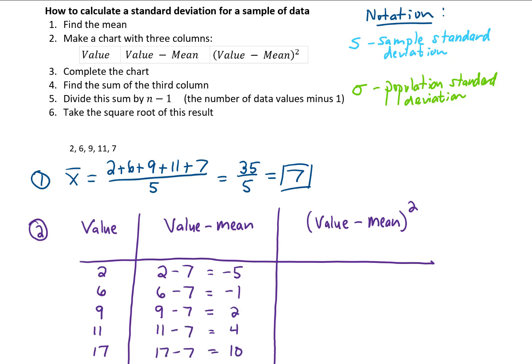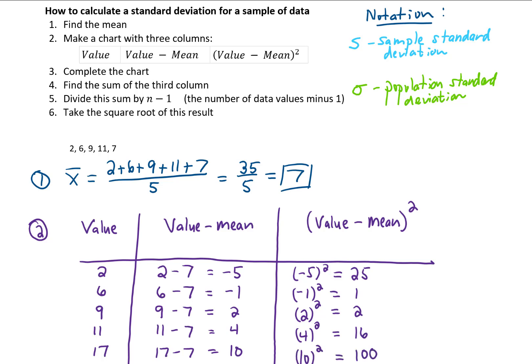In the third column, we take the results from the second column and square each one. Keep in mind that squaring a negative number gives a positive result — so negative 5 squared is positive 25. We continue squaring all of the results from the second column until the chart is complete.